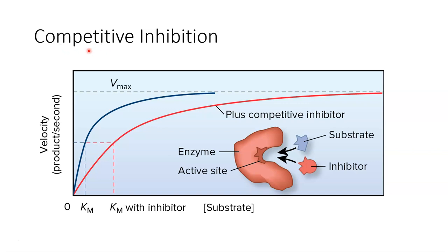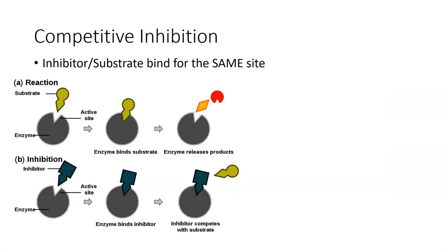The first type of inhibition we'll talk about is competitive. When you think of something competitive, typically you might be fighting for something — like a competitive race where two people are trying to get to the finish line first. That's exactly what happens in competitive inhibition: the substrate and the inhibitor are both fighting for the active site of the enzyme. Normally the substrate binds to the enzyme to form the enzyme-substrate complex, and the enzyme helps to pull the substrate apart or push it together to create products.